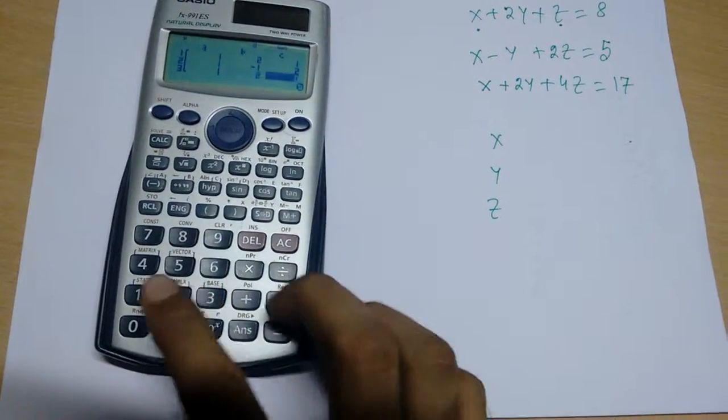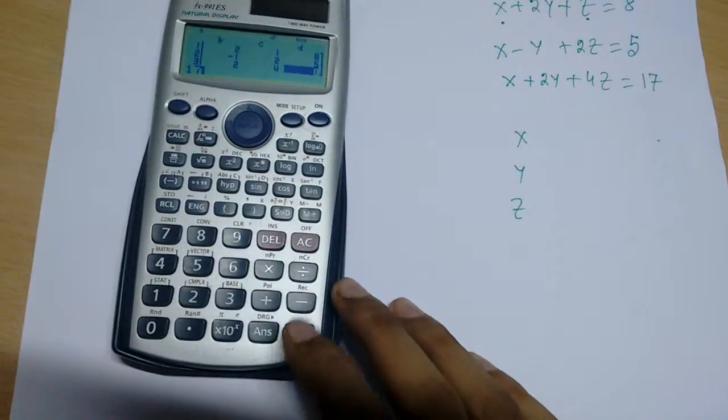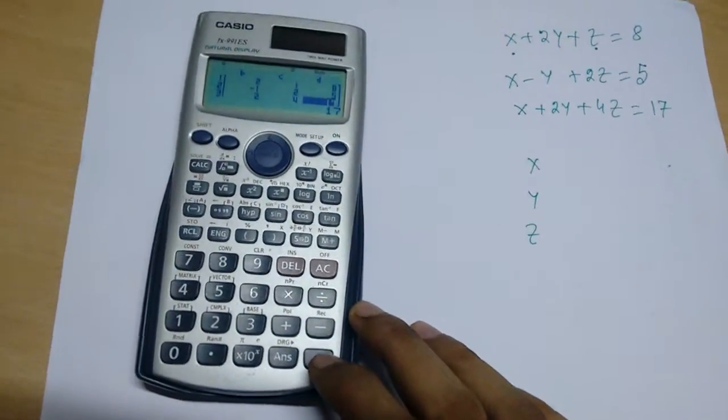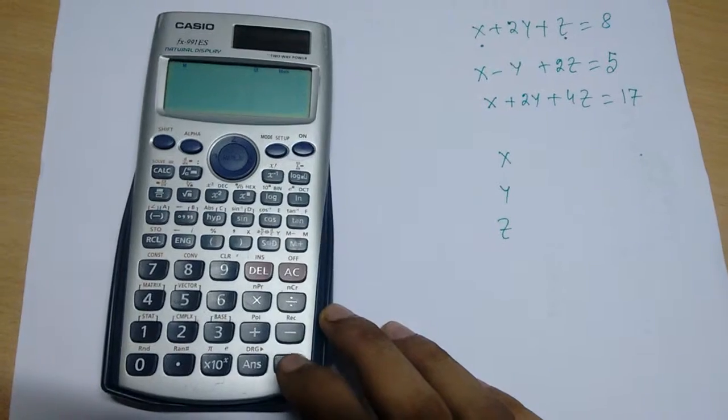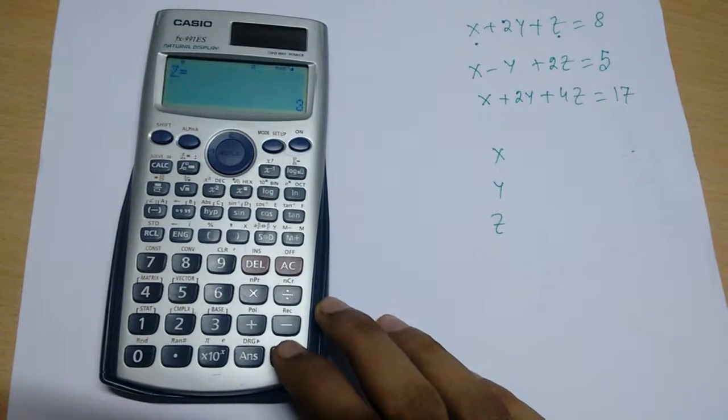Then 1, then 2, then 4, then 17. Simply after completing the values, you have to press equal to again and it will solve. It solves for x is 1, for y is 2, and for z is 3.